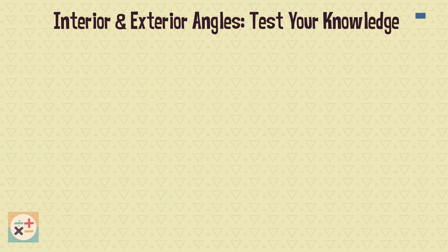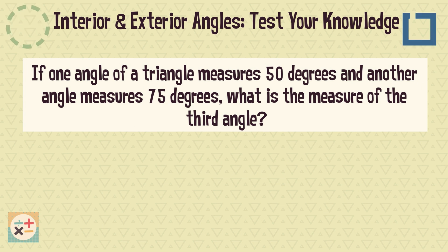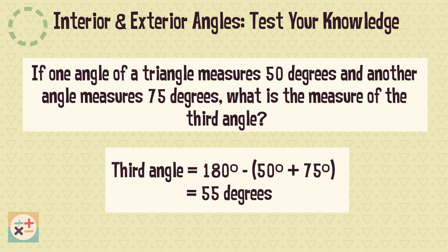Question 2. If one angle of a triangle measures 50 degrees and another angle measures 75 degrees, what is the measure of the third angle? The third angle equals 55 degrees.